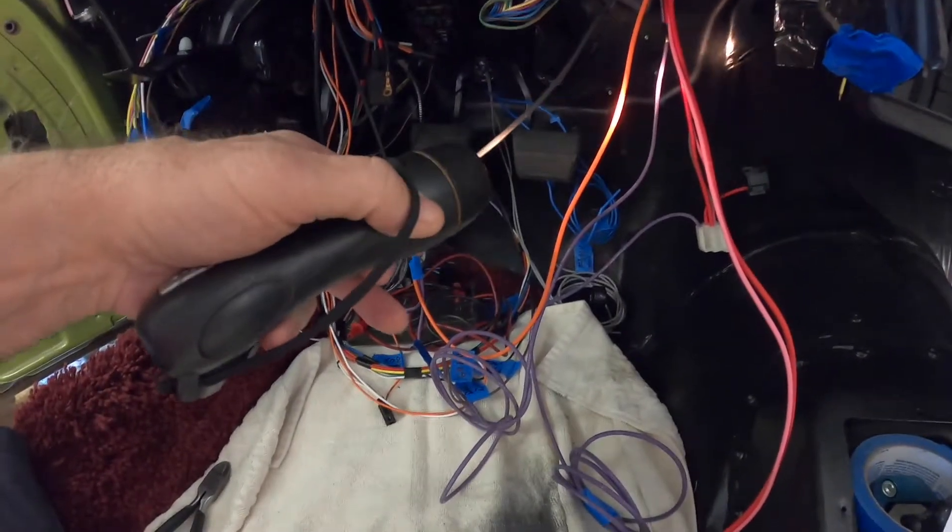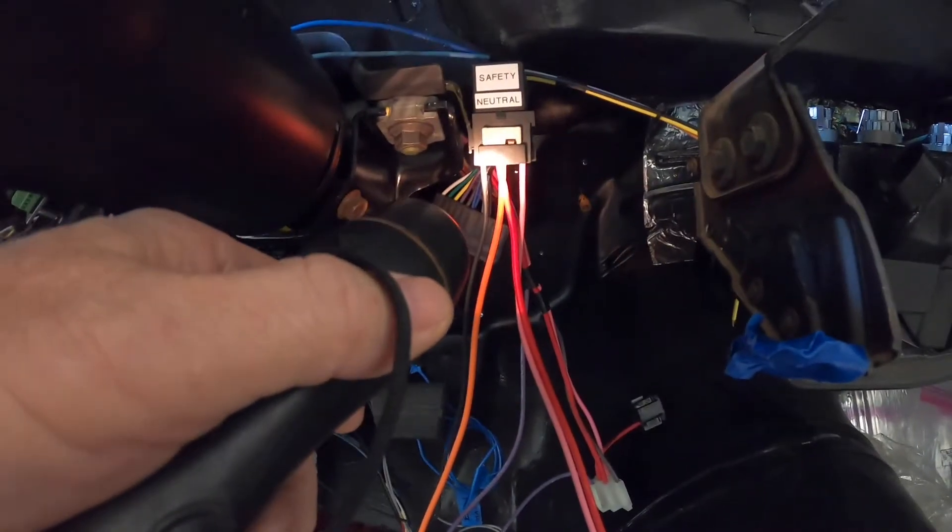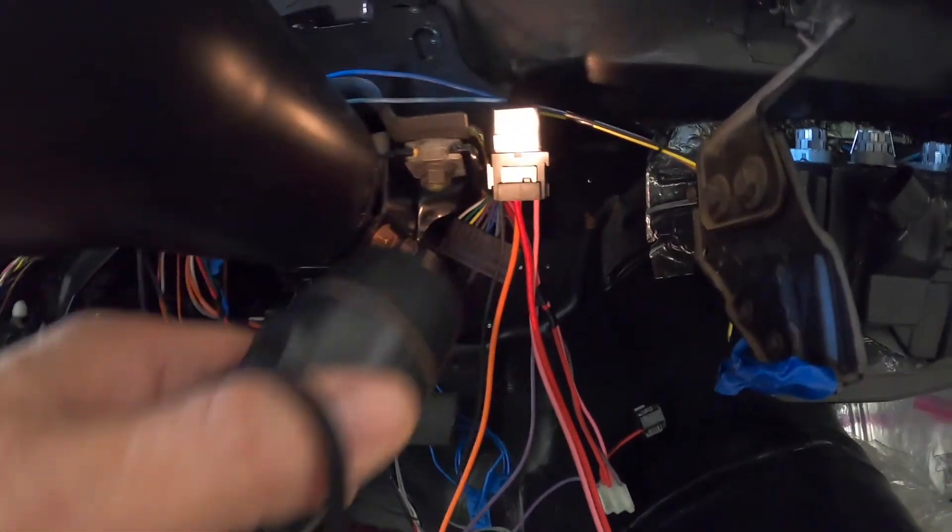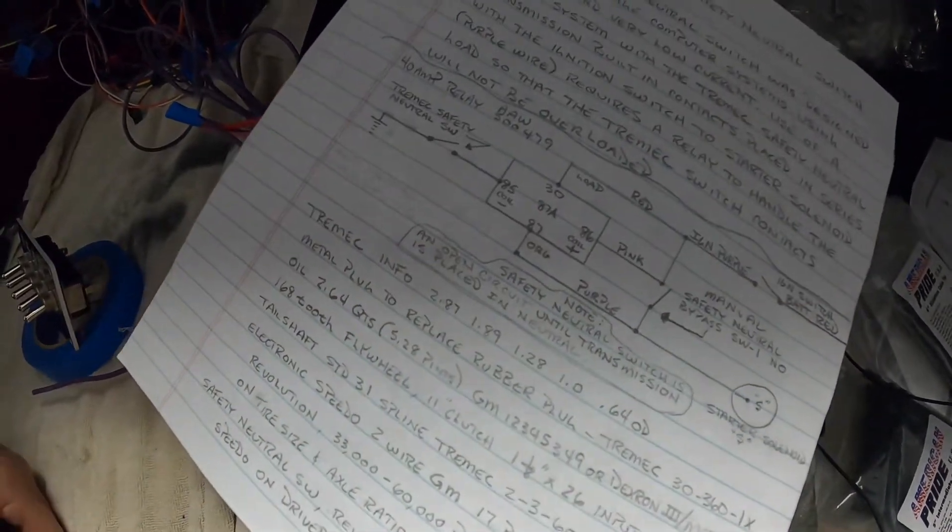Okay, so the black wire I was showing you at the transmission, that's this right here. And that goes to pin 85 on the relay. So that provides your ground to your coil.